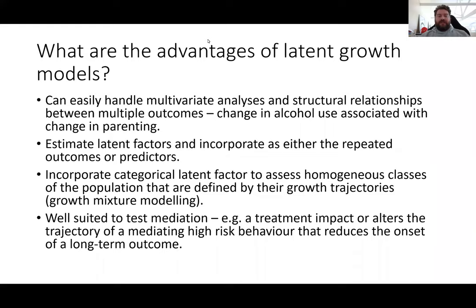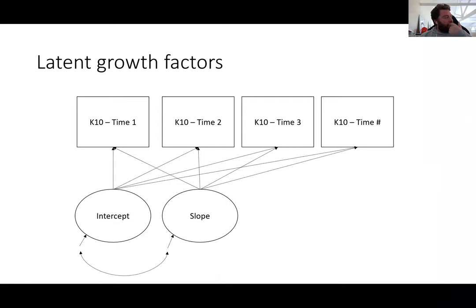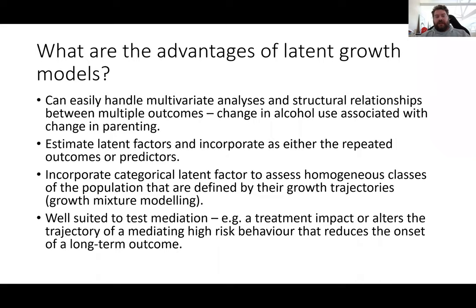A latent variable is a variable that we make up — it's not directly measured, but it represents some of the things we do measure. It's a way of saying: if we have five or six different variables that are all correlated, how can we better represent that correlation in a more parsimonious way using only a single variable? Those variables are essentially indicators of that latent construct.